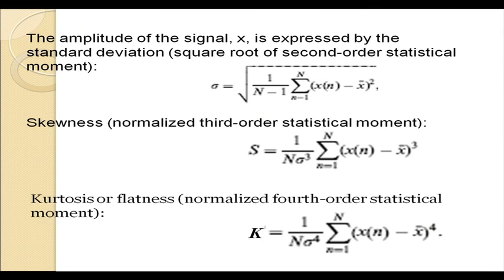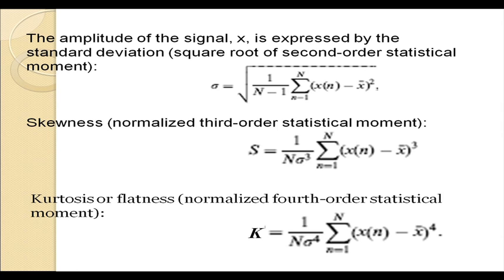Usually, the moments of the PDF curves are analyzed. The first moment is the mean value of the signal, which gives a rough idea regarding the average proportion of the two phases. There is also the expression for the standard deviation of the signal, and the nature of the peakedness or spread can be obtained from the skewness or the kurtosis.